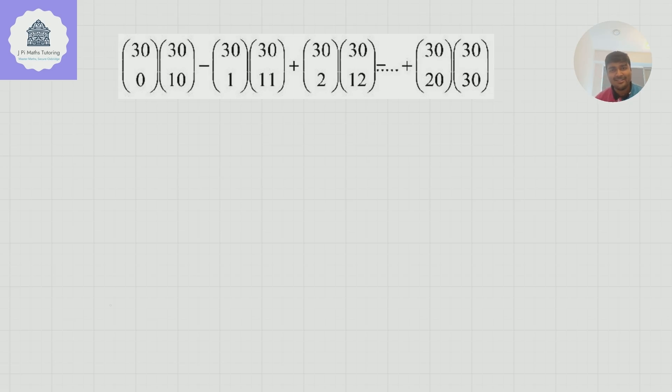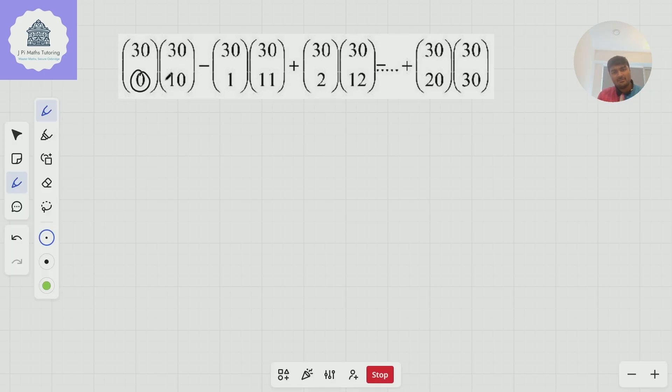I'm going to get stuck in. How do we approach this? We obviously don't want to do this manually. There's something to spot here. And in particular, it's two binomial coefficients being multiplied together, and I can see that these kind of base numbers are going up by 1 each time.